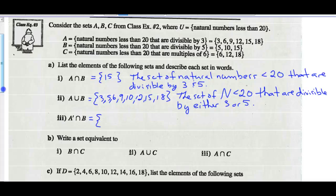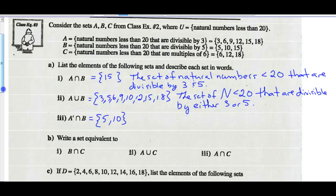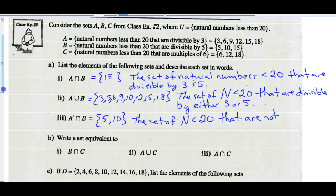Now A prime intersect B. Not A would include 1, 2, 4, 7, 8, 10, 11, and so on less than 20. Intersecting with B, not A and B have 5 in common, and 10 in common. Note that not A would not include 15 because that's already in A. So A prime intersect B gives the numbers 5 and 10. In words: the set of natural numbers less than 20 that are not divisible by 3 and are divisible by 5.